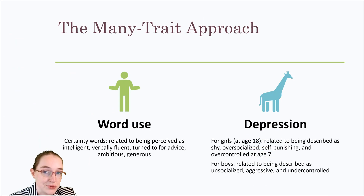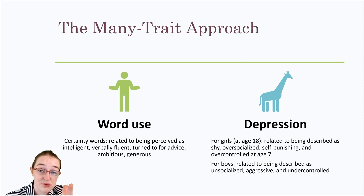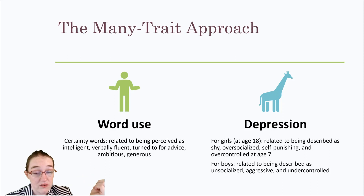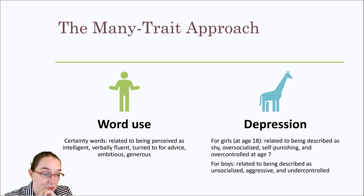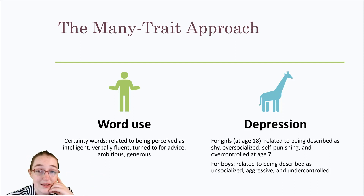The many trait approach applied to word use: certain words count as behaviors, so you can see what words are associated with which traits. 'Certainty words' — like 'absolutely,' 'exactly,' 'truly' — are related to being perceived as intelligent and verbally fluent. People who use these phrases are turned to for advice and considered more ambitious and generous. So if you want to be perceived as intelligent or have people seek your advice, using these words is one tactic that might work.